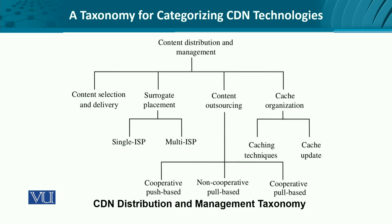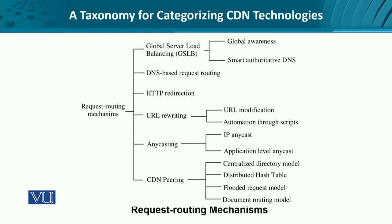For distribution and management, we have another taxonomy covering content selection, surrogate placement within a single ISP or across multiple ISPs, and content outsourcing — whether it is going to be pull-based, push-based, or cooperative pull-based. We could also think about the organization of cache: what is the frequency of cache updates, and what is going to be the caching mechanism — how much caching is going to be performed.